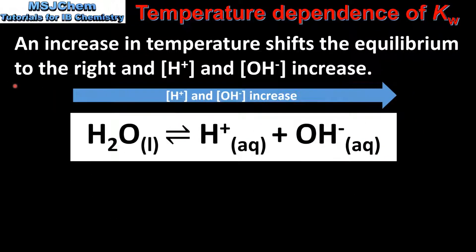If we apply Le Chatelier's principle we can predict in which direction the position of equilibrium will shift when the temperature is increased or decreased. Because the forward reaction is endothermic, an increase in temperature shifts the equilibrium to the right and the concentrations of H plus and OH negative ions increase.